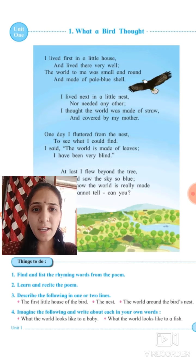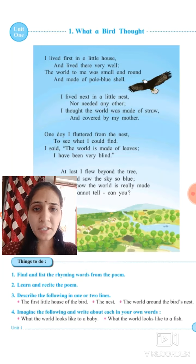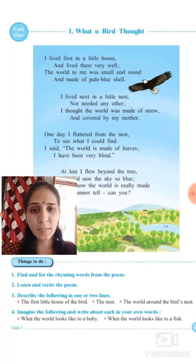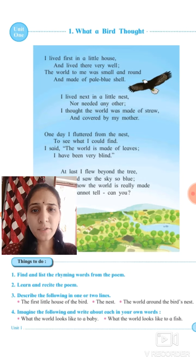I live next in the little nest. Abhi next jo house hai — my house has changed into a nest. Mera jo doosra ghar hai, woh nest hai. Nor needed any other. I thought the world was made of straw and covered by my mother.